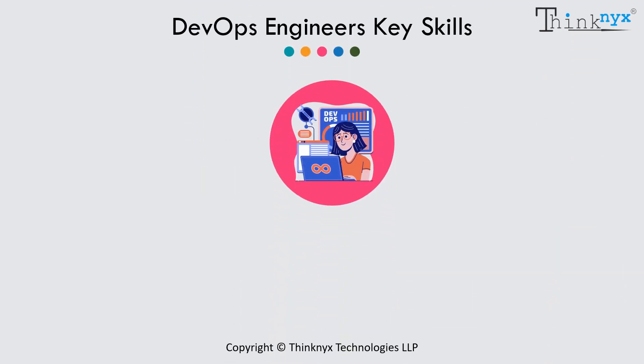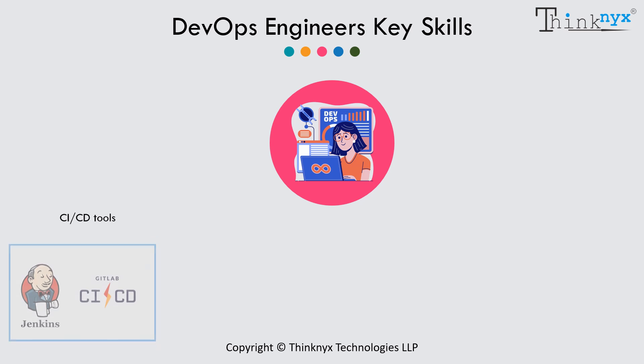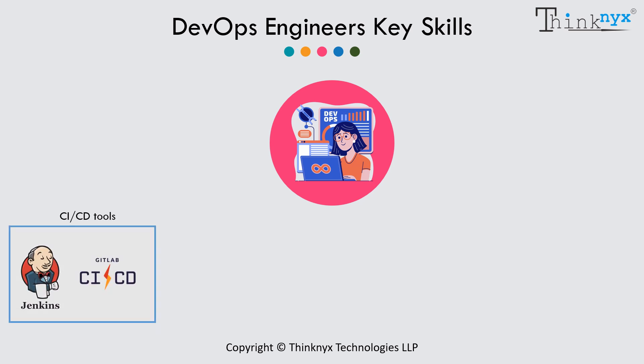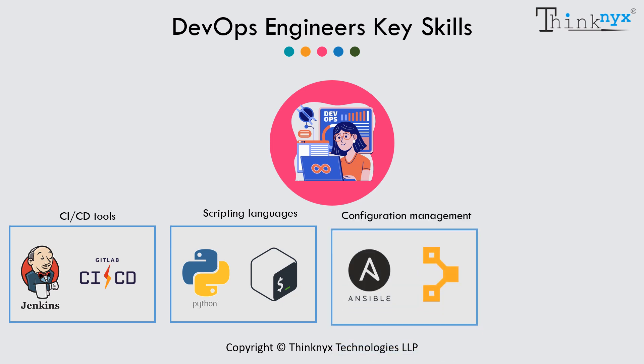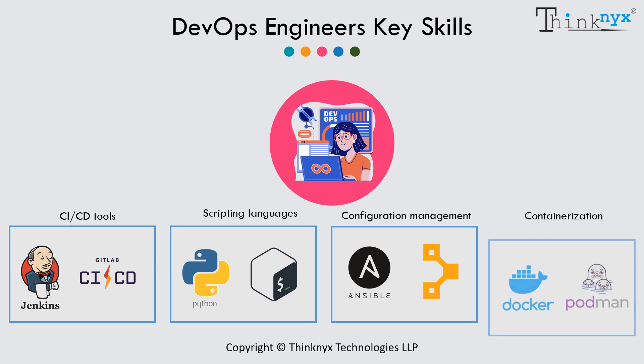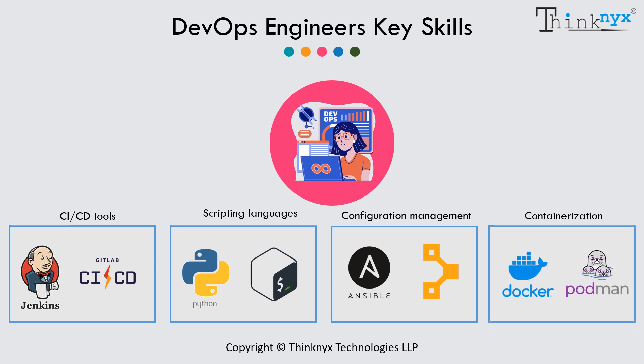Key skills for DevOps engineers include CI/CD tools such as Jenkins and GitLab CI/CD, scripting languages such as Python and Bash, configuration management using tools such as Ansible and Puppet, and containerization using tools such as Docker and Podman.